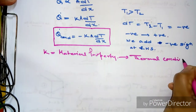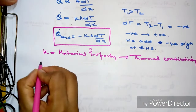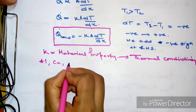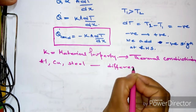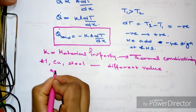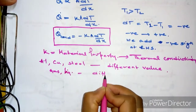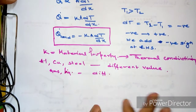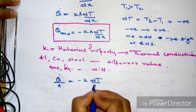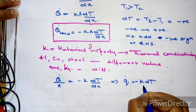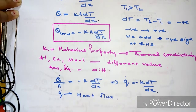We can also write this equation in another form: q_conduction divided by cross-sectional area A equals −k·dT/dx. The quantity q_conduction/A is the heat flux, denoted by small q. This is the Fourier's law of conduction expressed in terms of heat flux.